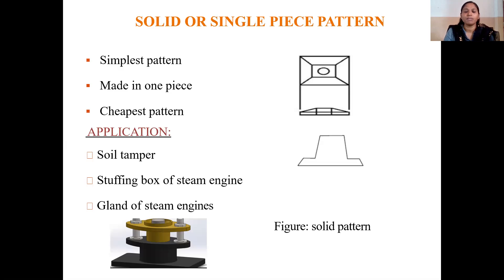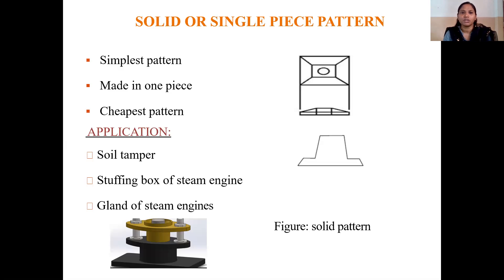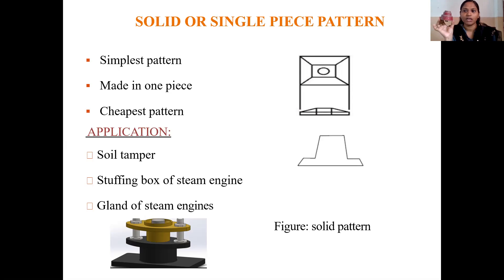It is also used to produce the stuffing box of a steam engine. The stuffing box is produced by this single piece pattern. It is used to produce the different parts of the steam engine by the solid pattern. Here you can see how the solid pattern looks.